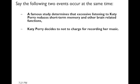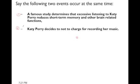This one involves simultaneous changes. Evaluate each situation separately and then look at your choices. If a famous study determines that excessive listening to Katy Perry reduces short-term memory and brain-related functions, most people will demand less Katy Perry music and be willing to pay less at every price. That reduces demand, so the price goes down and the quantity goes down.